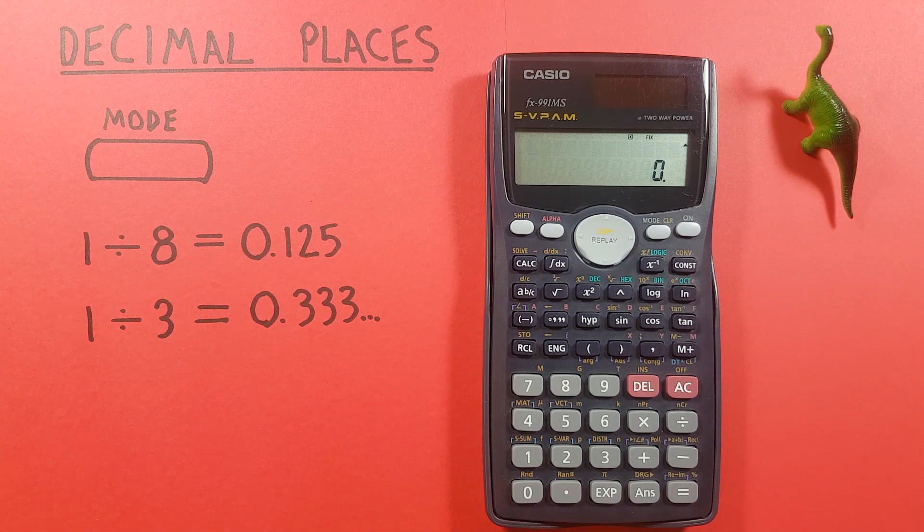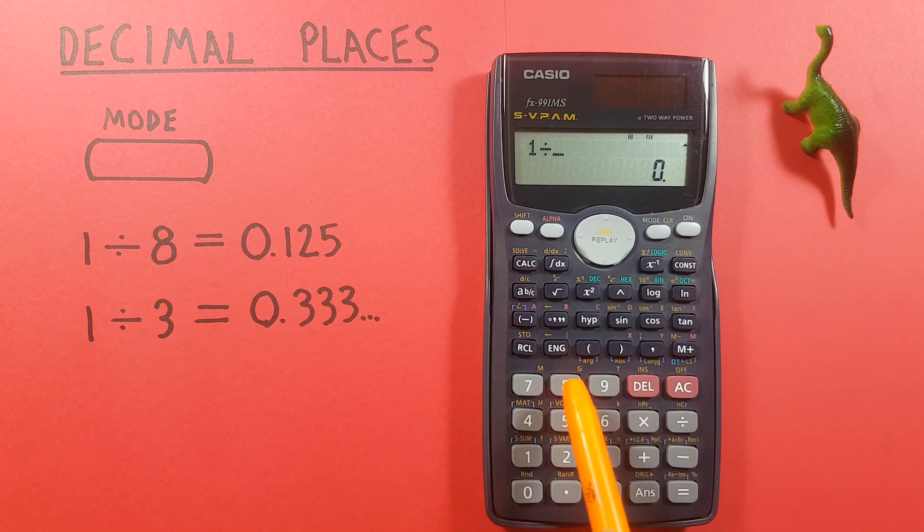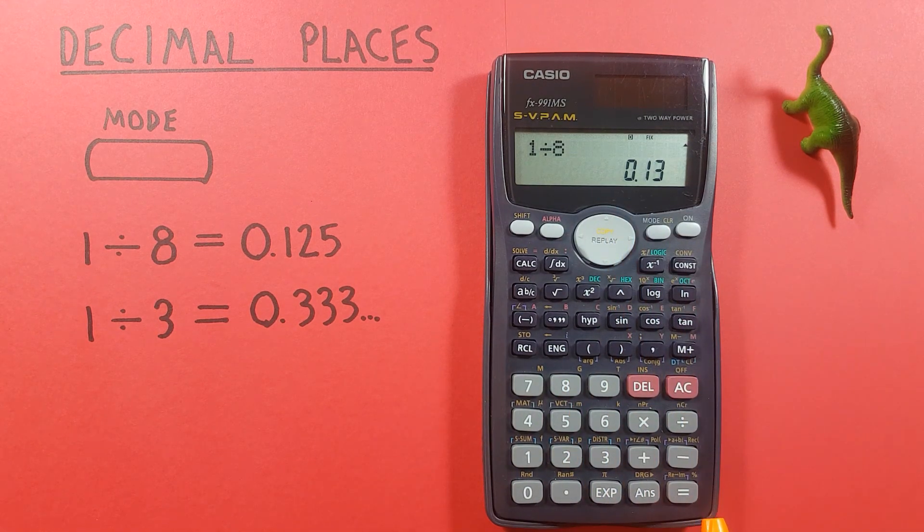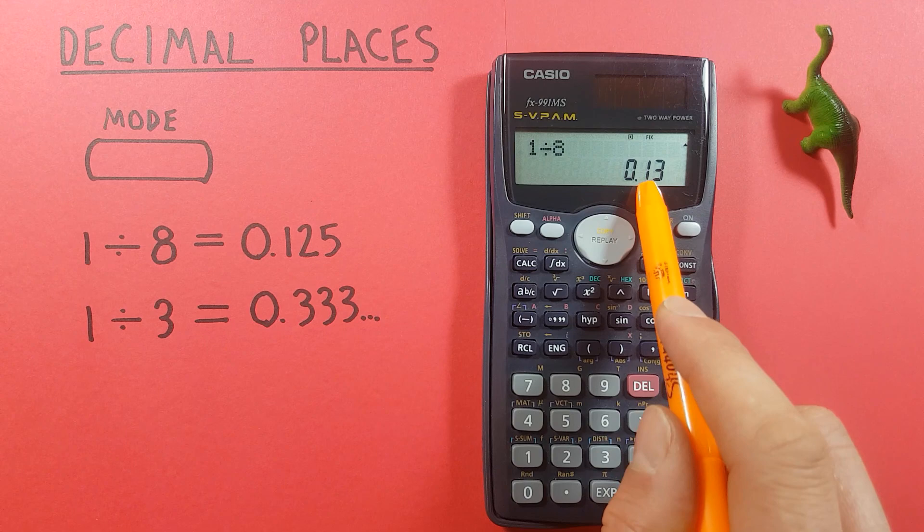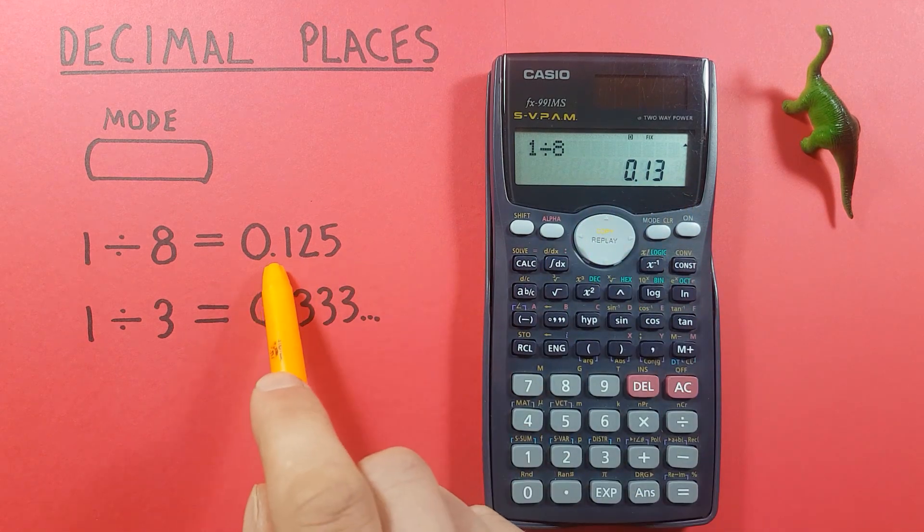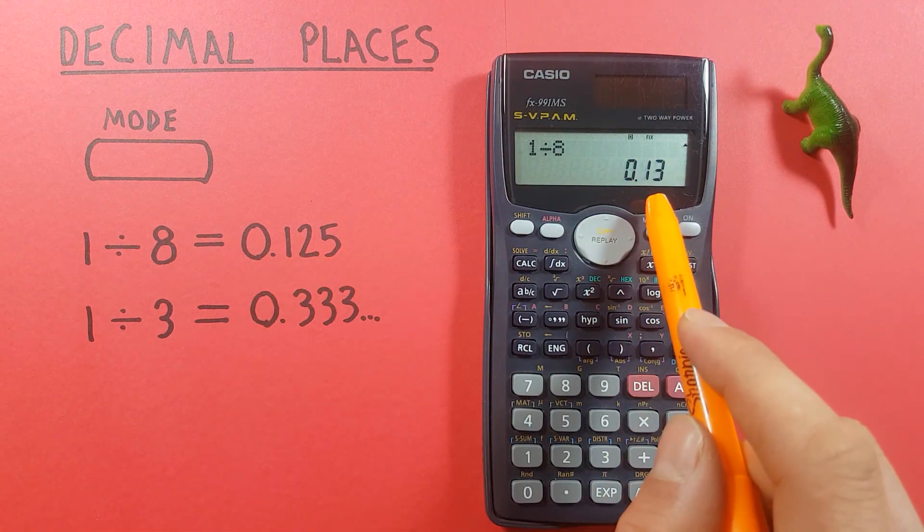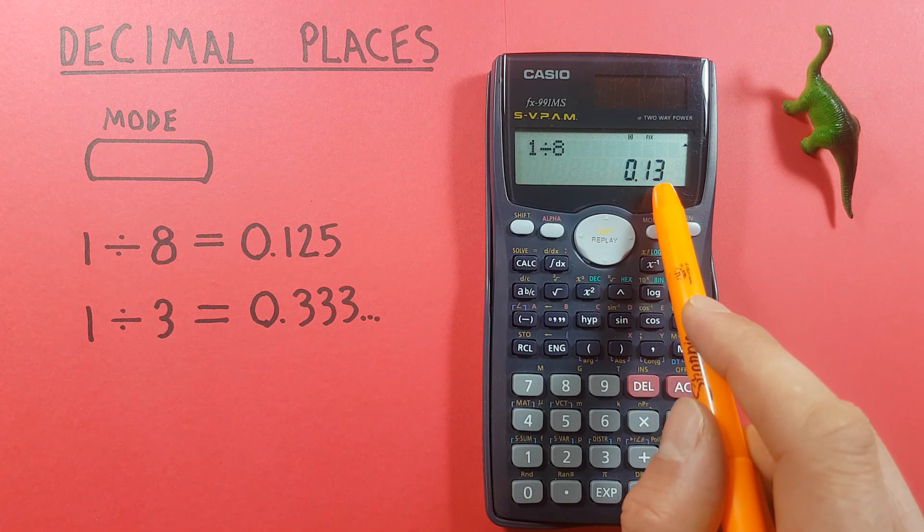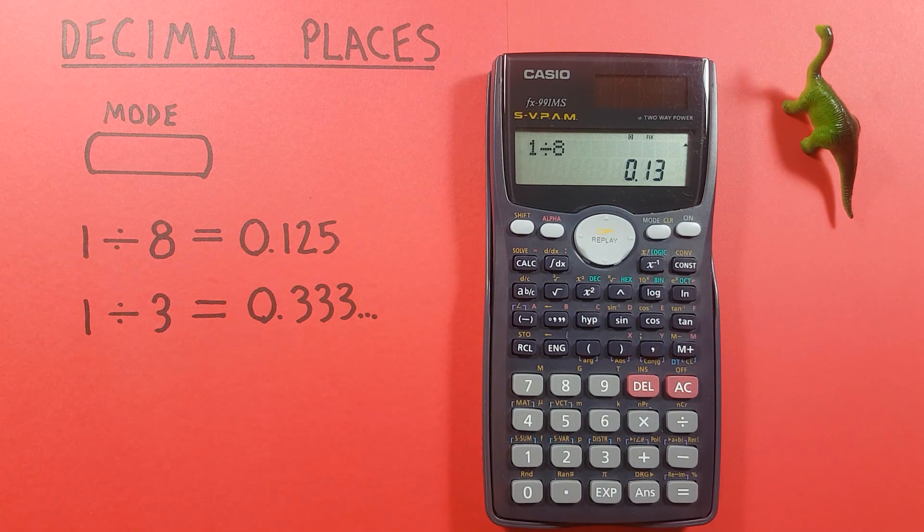Now if we try to do 1 divided by 8 press equals we see we get 0.13. That's because the 0.125 has been rounded up so that we only get two decimal places and that 2 has now become a 3.